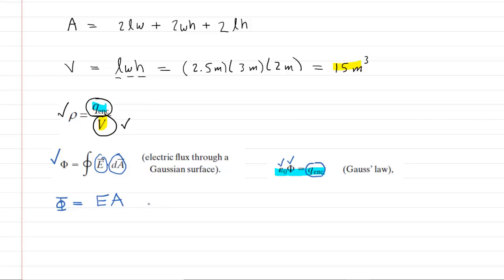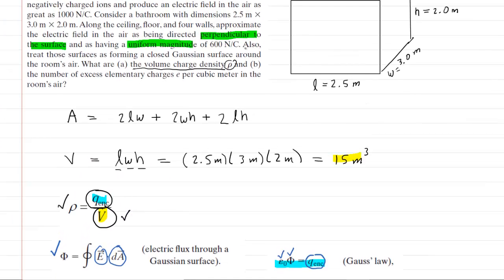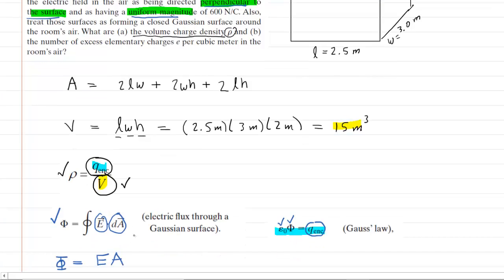And remember, you can do that as long as those conditions are satisfied. Those conditions being that the electric field has a uniform magnitude and it is perpendicular to the surface. So we can actually easily calculate the total electric flux by multiplying the electric field by the total area of the bathroom. We might need to back up and find that total area right here. We've written the equation out for the total area.